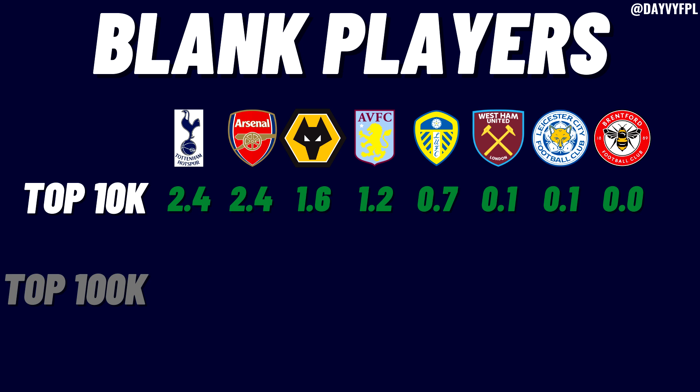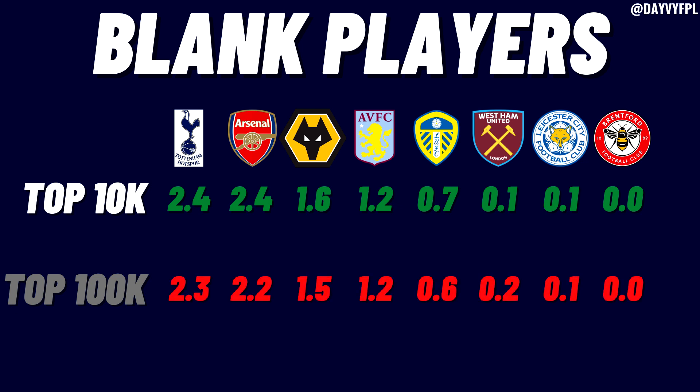For the top 100k: Spurs drop slightly to 2.3 and Arsenal to 2.2. Wolves drop to 1.5, Aston Villa stays at 1.2. Leeds drop to 0.6 but West Ham increases to 0.2. Leicester and Brentford remain consistent.